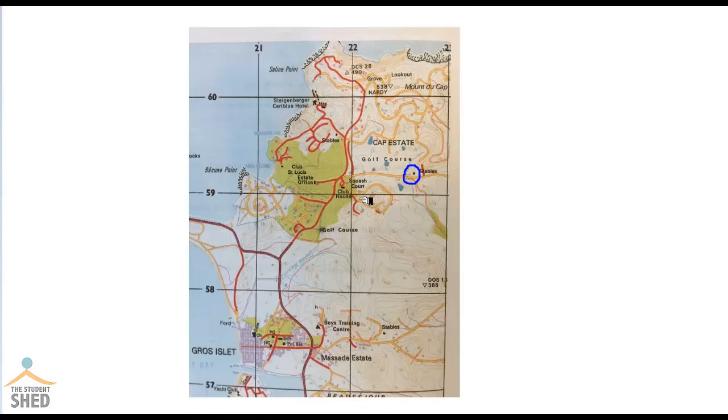We know that in order to find the four-figure grid reference, we must first mark off the lower left-hand corner. Next, we go along the corridor until we get to that point, and we go up the stairs. We now have the four-figure grid reference, which is 2259.